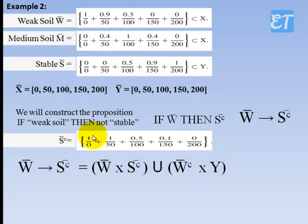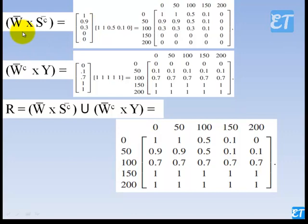The complement of S is computed as: 1 minus 0, 1 minus 0.5, 1 minus 0.9, and 1 minus 1, giving values 1, 0.5, 0.1, 0. We find the relation matrix R — the intelligence from Rule 1 — as: W cross complement-of-S, union complement-of-W cross Y. This gives us the relation matrix from Rule 1.